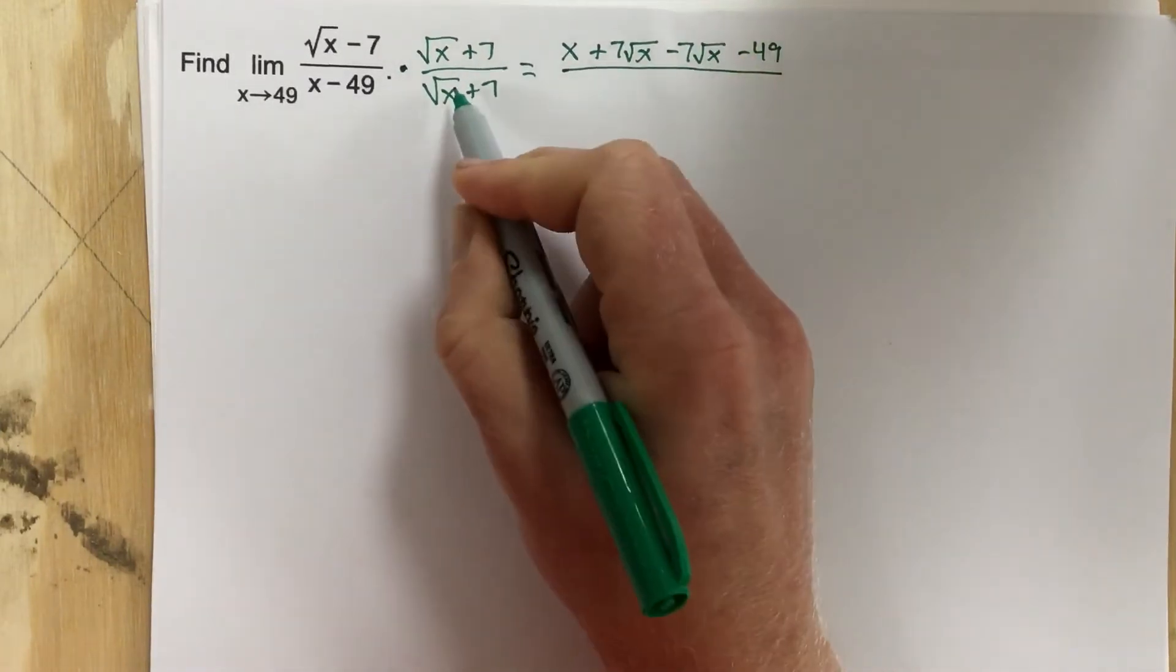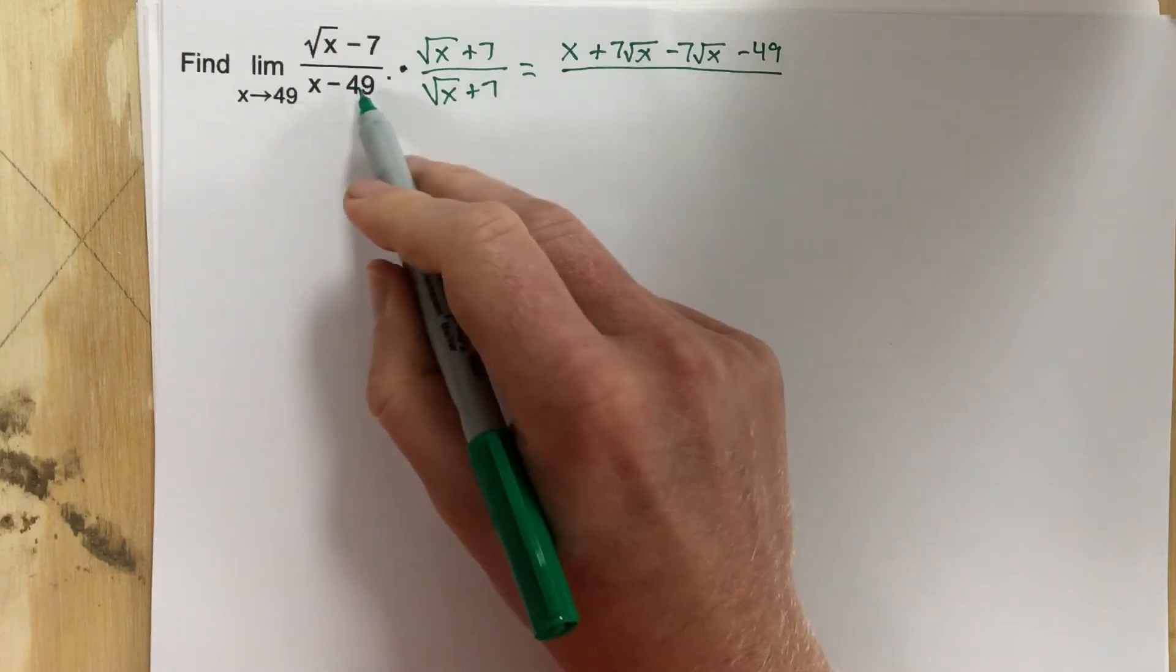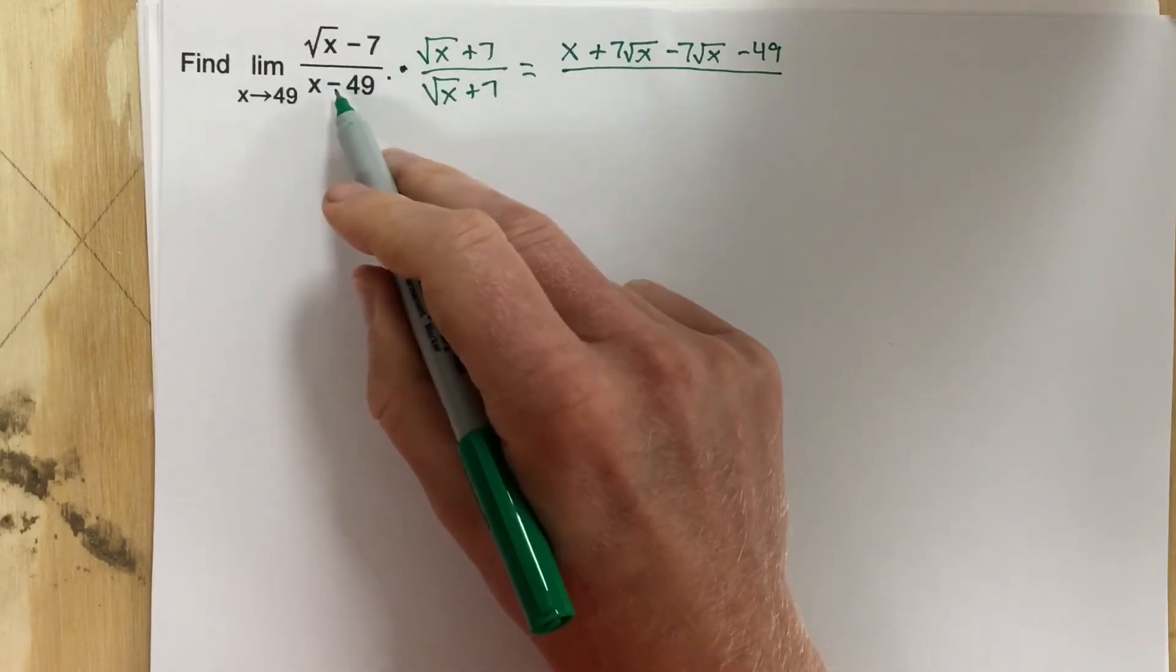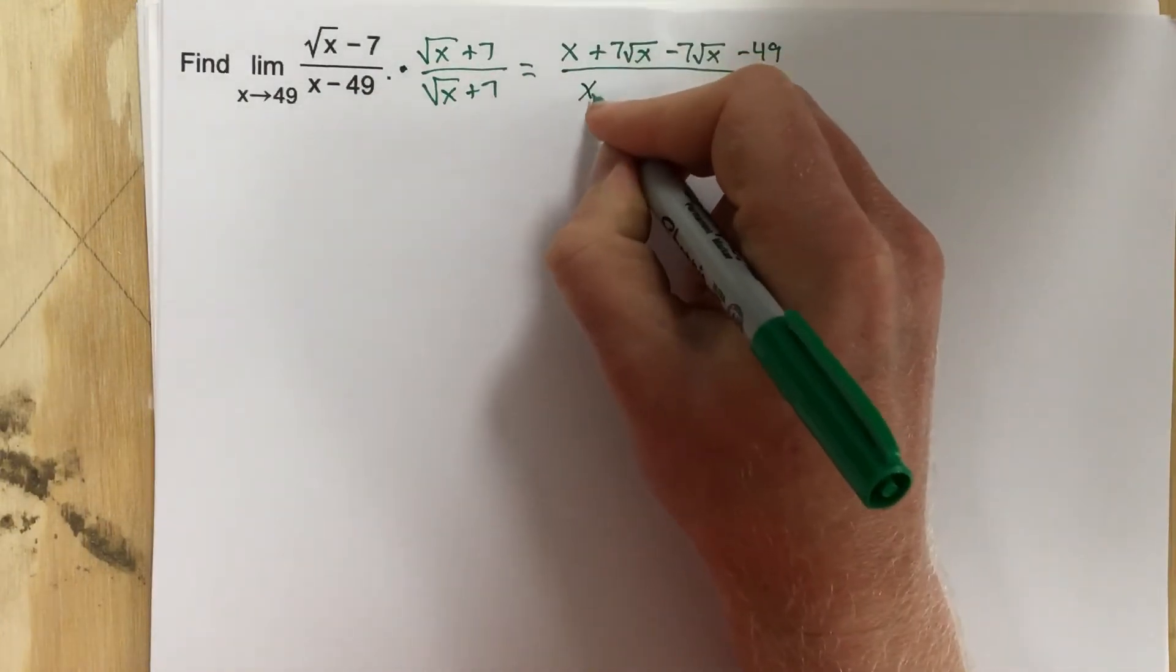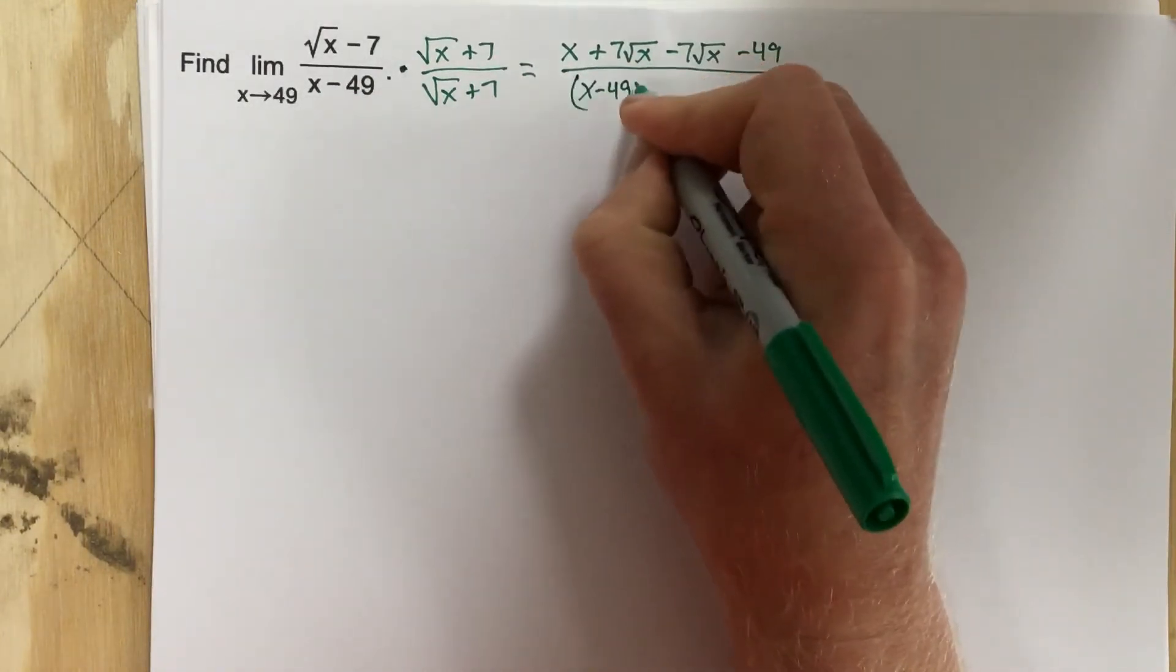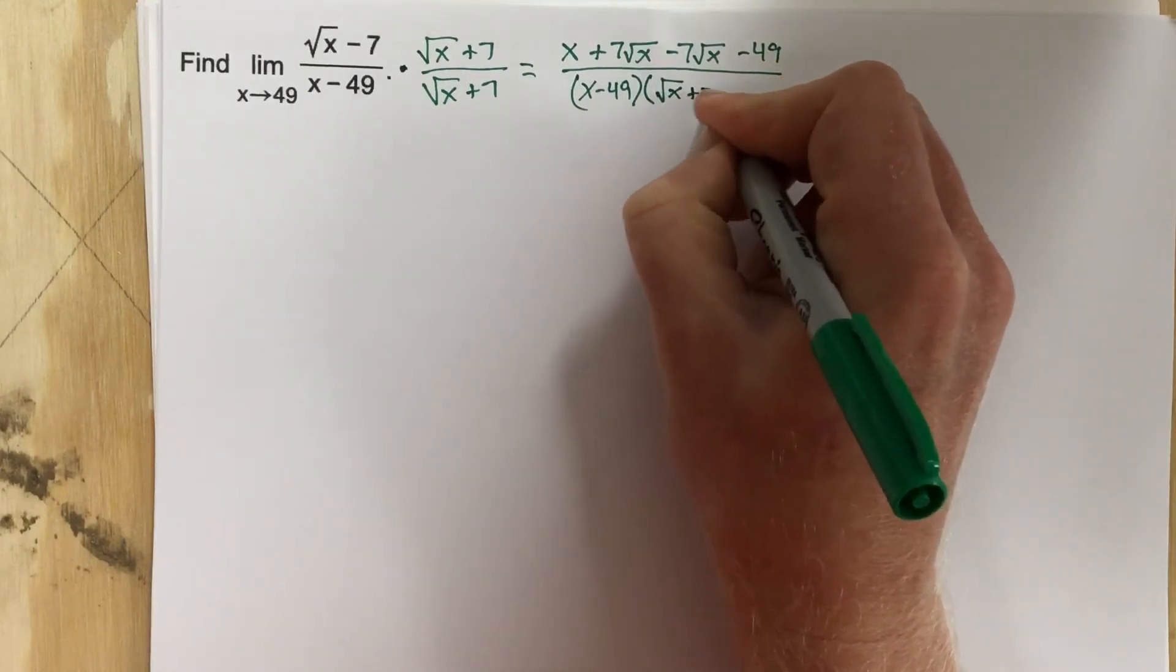On the bottom, I don't want to multiply these together because I'm trying to cancel x minus 49. That's the problem here, when I plug in 49, it becomes 0. So let's leave it as x minus 49 times root x plus 7.